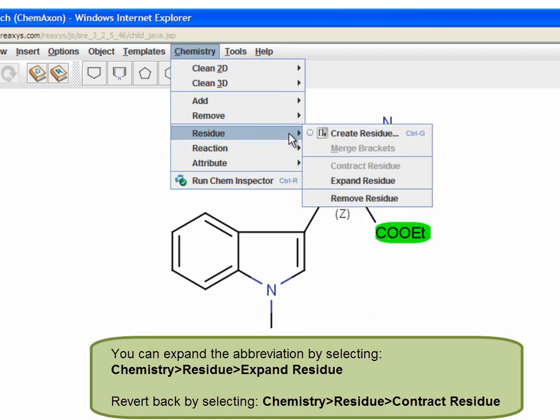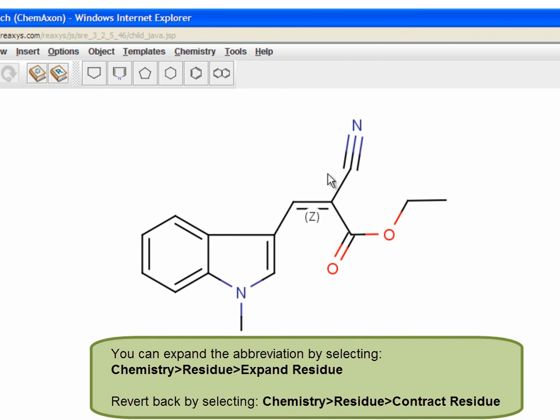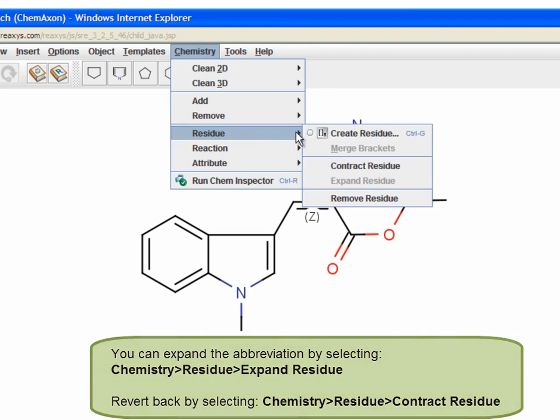You can expand the abbreviation by selecting Chemistry Residue Expand Residue. Revert back by selecting Chemistry Residue Contract Residue.